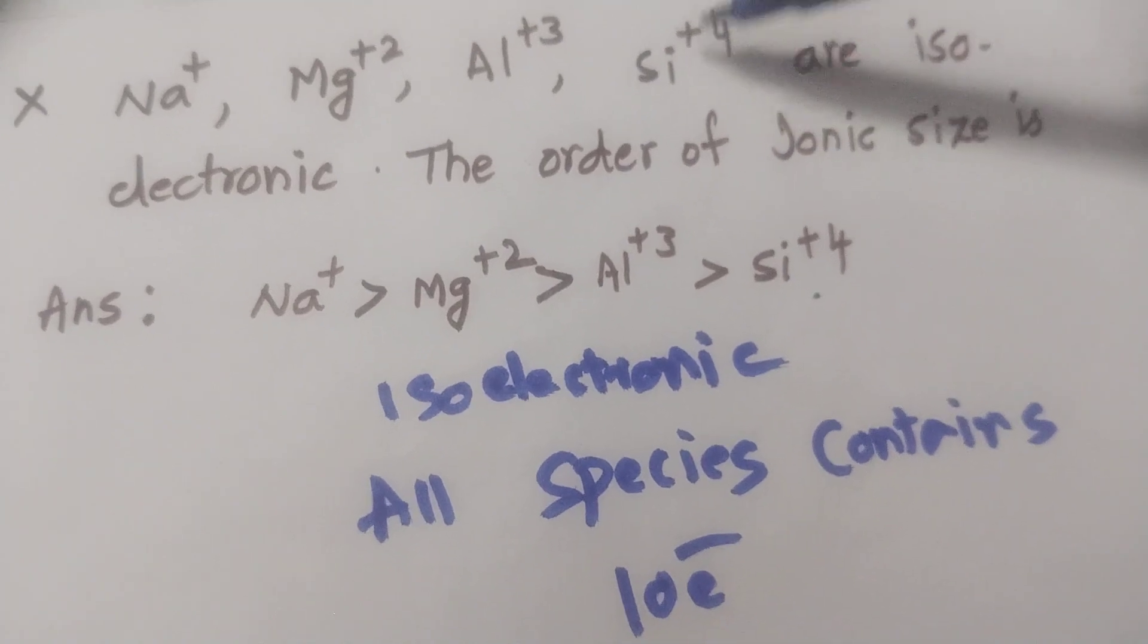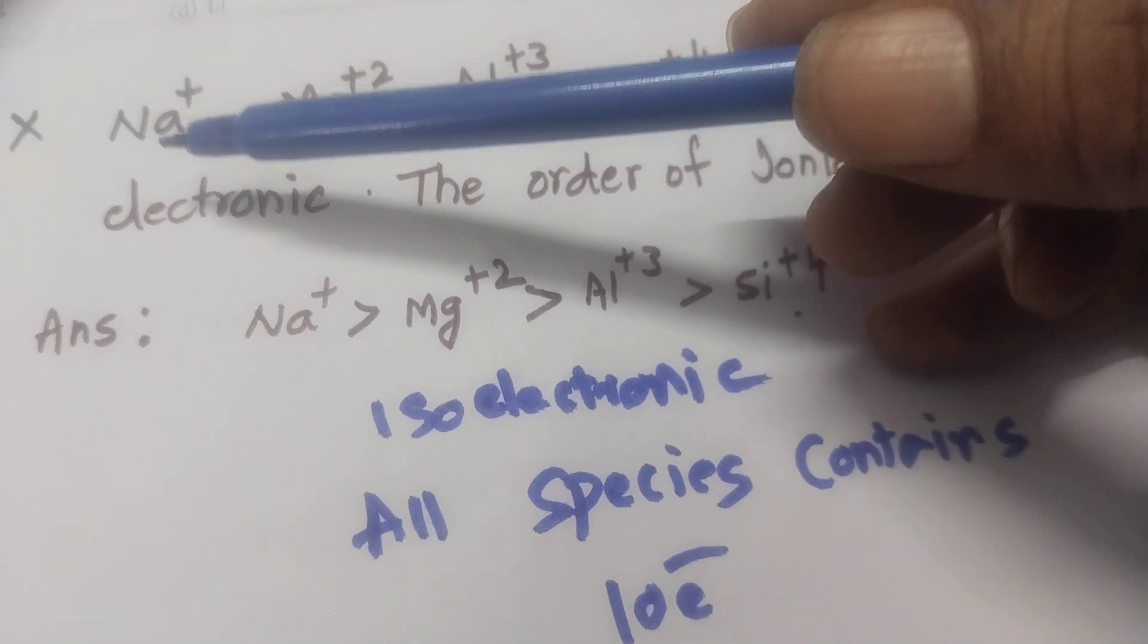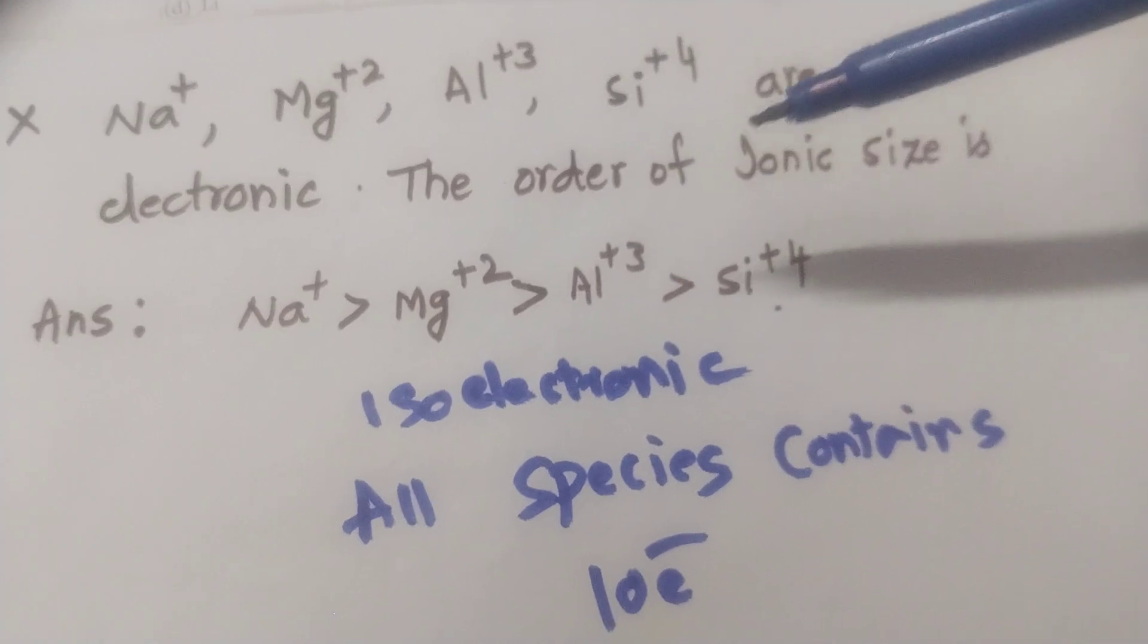So here positive charge is more. Here, positive charge is less. Less positive charge, more atomic size. More positive charge, less atomic size. At the same time, negative charge increases.